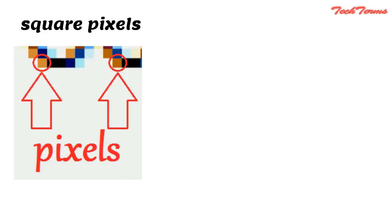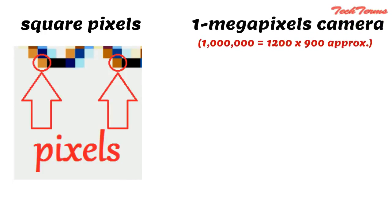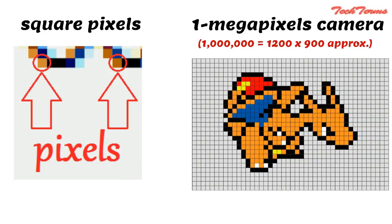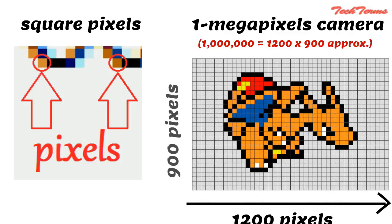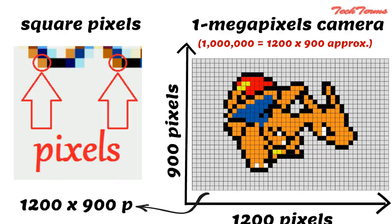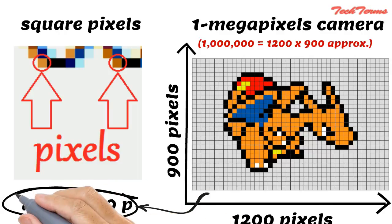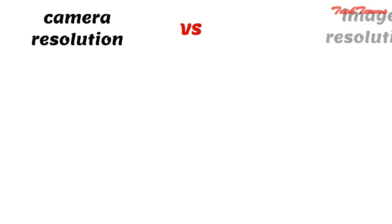Since pixels are square in shape, a 1 megapixel camera will produce an image that is 1200 pixels wide and 900 pixels high. So we say that the image resolution is 1200 x 900 pixels. Note the difference between camera resolution and image resolution.